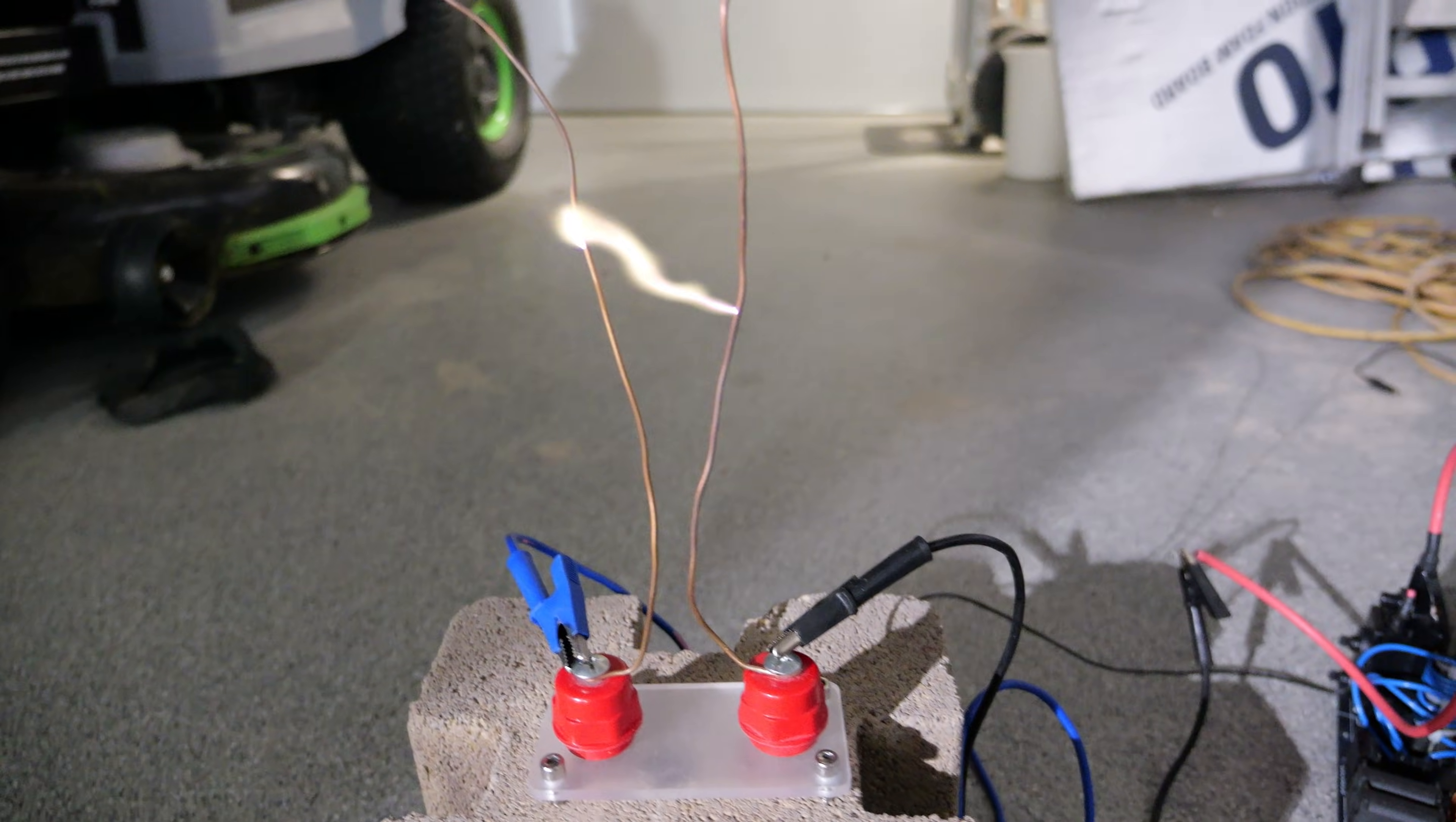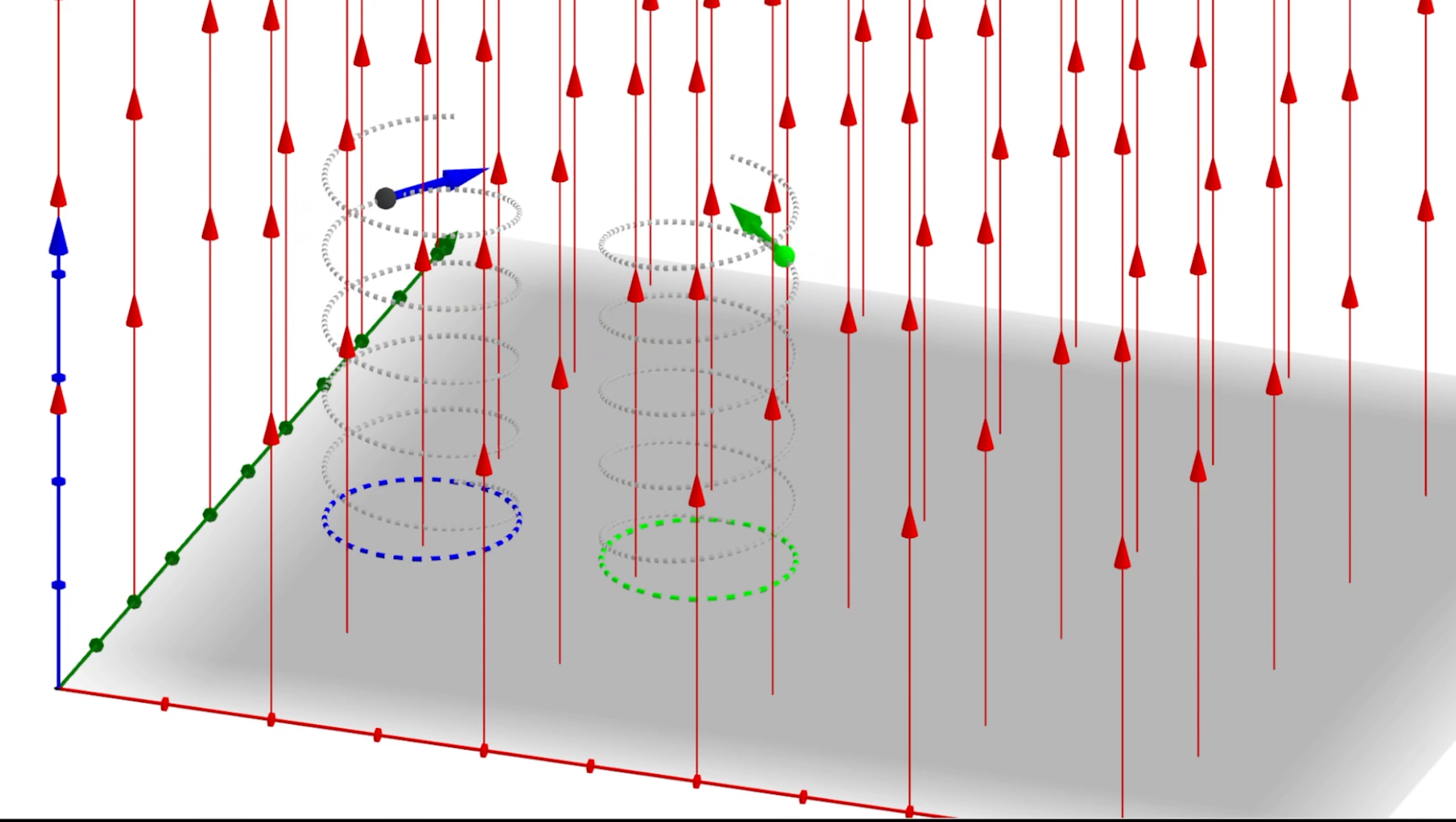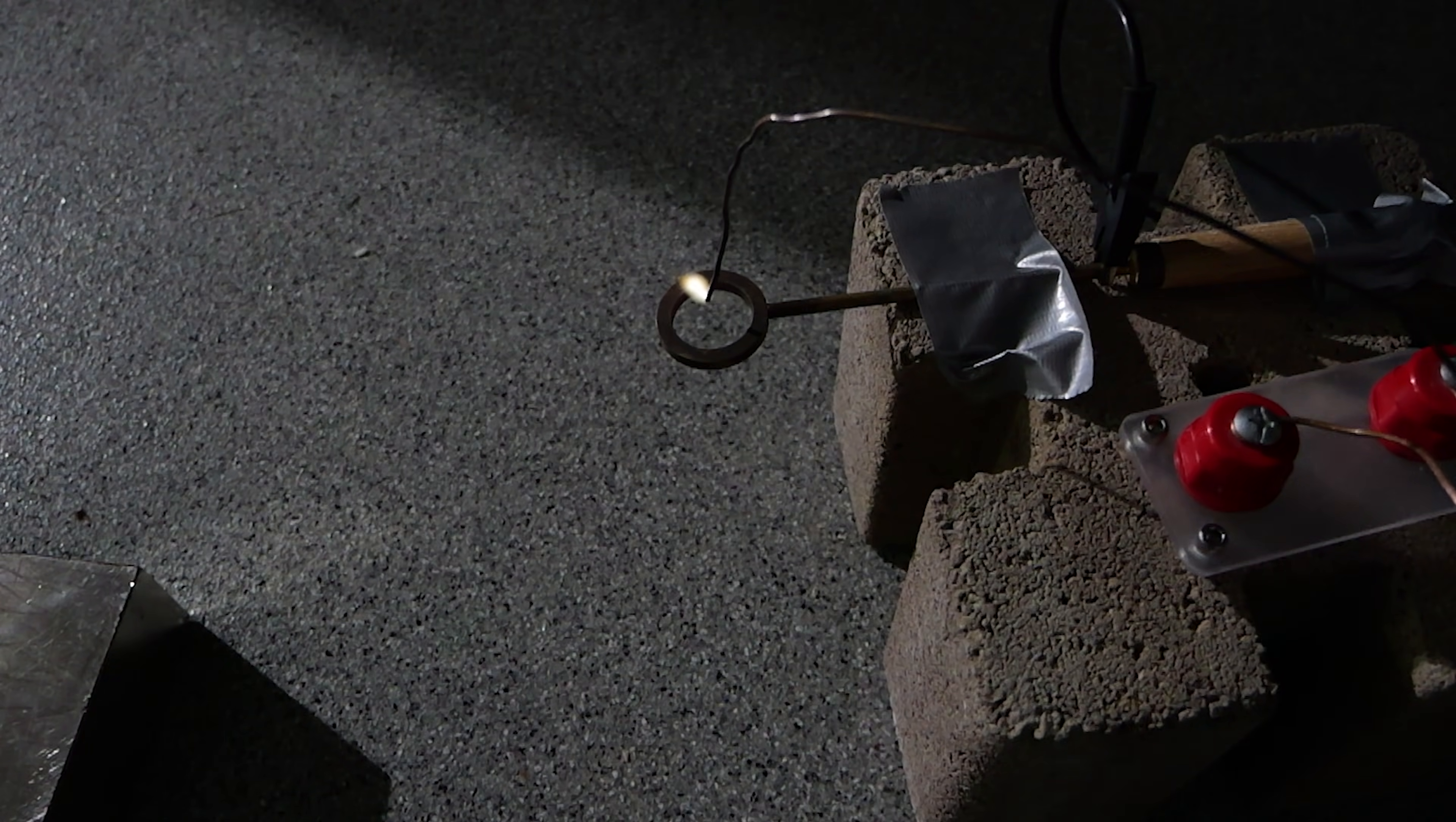But that's for a DC current. This Jacob's ladder should be AC. Could it be that there's some DC component to this? Well, I can easily check if there's some direct current going through these wires. Remember that when you have a moving charge passing through a magnetic field, the Lorentz force causes that charge to curve. So if I set up my electrode so that I have a center electrode surrounded by a circular outer electrode and turn it on, you see a normal spark, exactly what we'd expect.